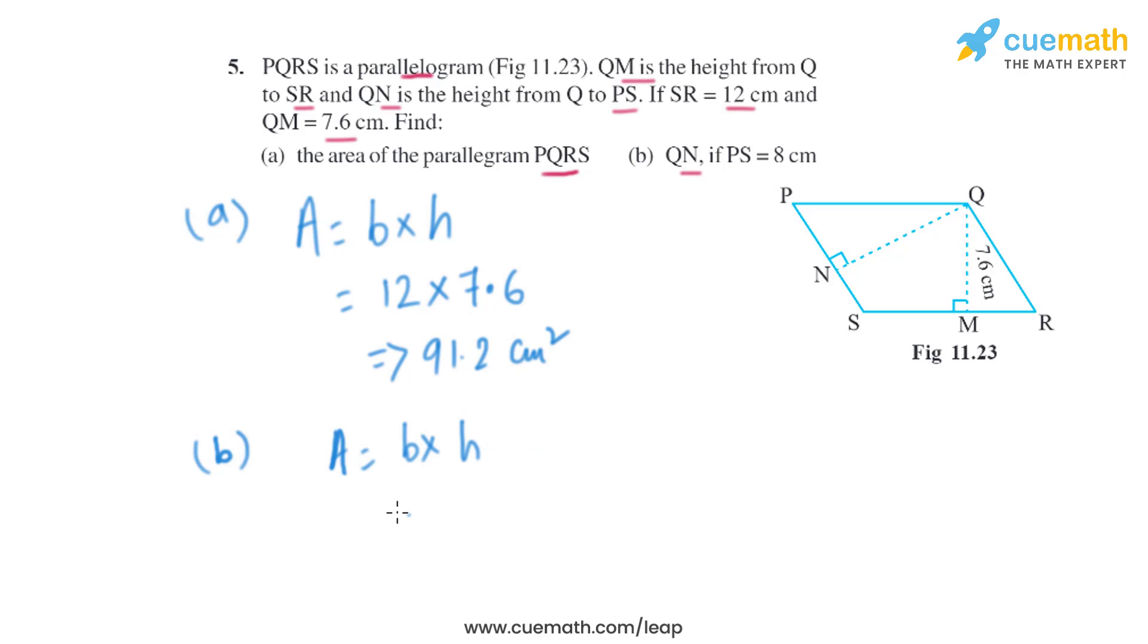The area we know will be the same, 91.2 square centimeters, and we know the base PS is 8 cm. We can easily find the height. So the height, which is QN, will be 91.2 divided by 8, which equals 11.4 centimeters.